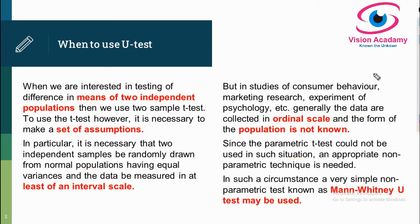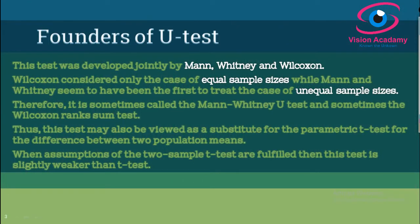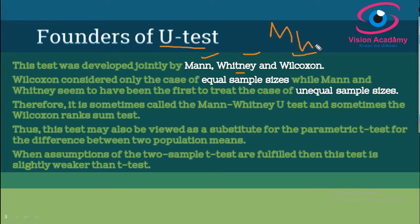Now let us understand who proposed the Mann-Whitney U test. The name itself tells us — Mann and Whitney. This test was developed jointly by Mann, Whitney, and Wilcoxon. In some books, you may see it called the MWW test, and it is also referred to as the U test, the Wilcoxon test, or the Mann-Whitney test.